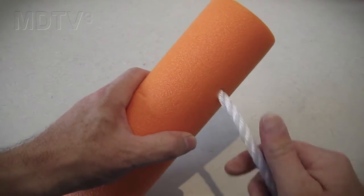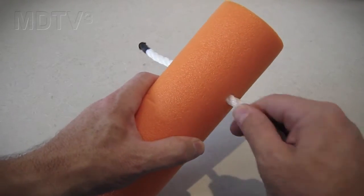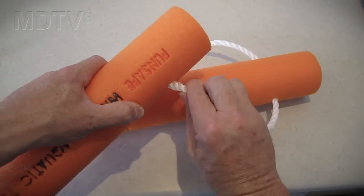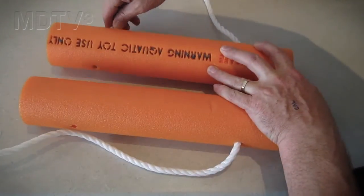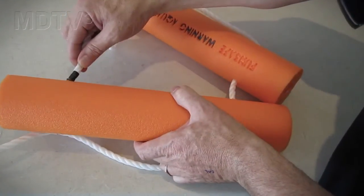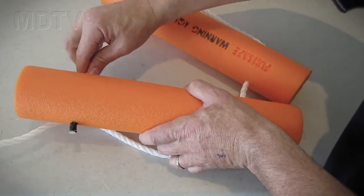Push the rope through the holes in one end of the first section of the pool noodle. Continue pushing the rope through a second section of pool noodle. Push the rope through the remaining hole in the pool noodle you've just threaded, then push the rope through the remaining hole in the first section of the pool noodle.